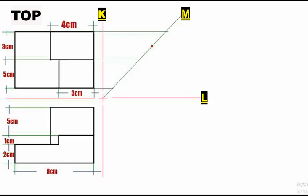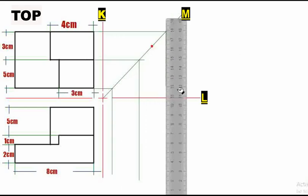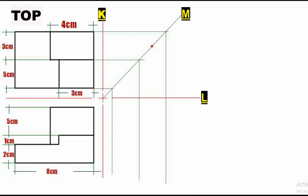Construct a vertical line originating from the intersection point with line M. Similarly, extend the horizontal lines from the front view until they intersect with the vertical lines.